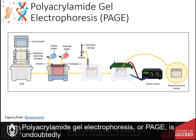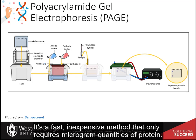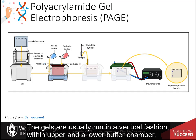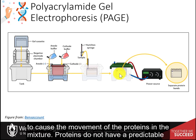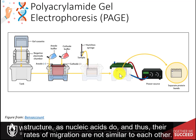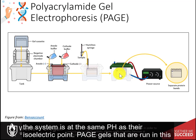Polyacrylamide gel electrophoresis, or PAGE, is undoubtedly one of the most widely used techniques to characterize complex protein mixtures. It's a fast, inexpensive method that only requires microgram quantities of protein. The gels are usually run in a vertical fashion, with an upper and a lower buffer chamber where the buffer contacts the gel. An electrical current is applied to cause the movement of proteins in the mixture. Proteins do not have a predictable structure as nucleic acids do, and thus their rates of migration are not similar to each other. Furthermore, they will not migrate when the pH of the system is at the same pH as their isoelectric point.